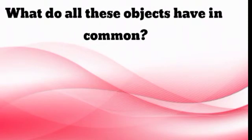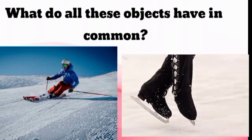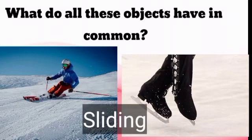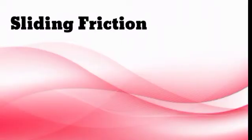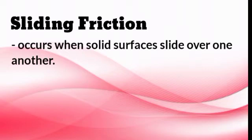Now I have another set of pictures. What do all these objects have in common? Those objects are sliding. Therefore, we have the third type of friction, which is sliding friction. Sliding friction is friction that occurs when solid surfaces slide over one another — one solid surface slides over another.